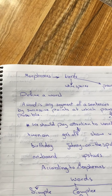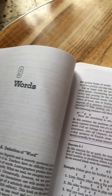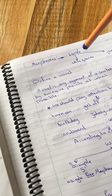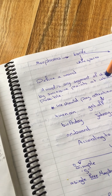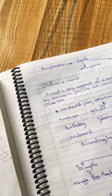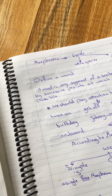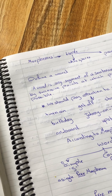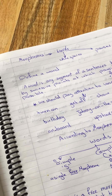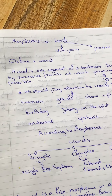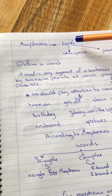Good morning students. Today we have Chapter Nine: Words. We are moving from morphemes to words. In Chapter Nine, after knowing what is meant by morphemes, after knowing what is meant by free morpheme, bound morpheme, etc., today we are going to learn what is meant by words.